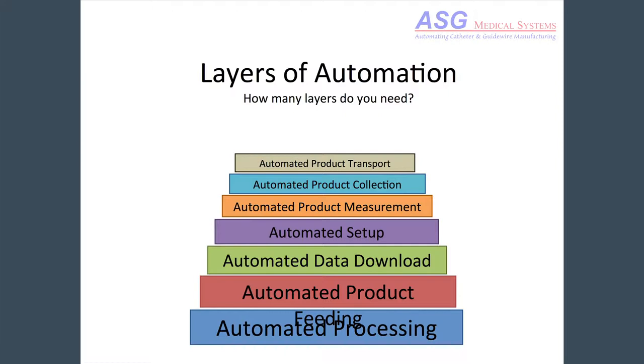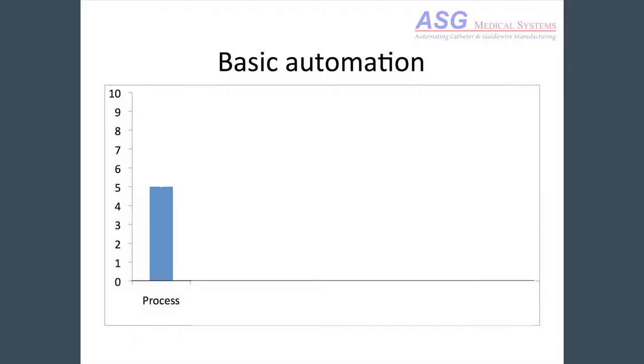The lowest layer is the process itself. An example I like to use is tube cutting, which is a fundamental process in catheter manufacturing — catheters are made of tubes. It can be done by a person with a razor blade and a ruler. But an automated tube cutter can do a better job and do it at least five times faster, sometimes 20 or 50 times faster, depending on how difficult the job is. We could say the automated tube cutting process has at least five times the goodness of the manual process.